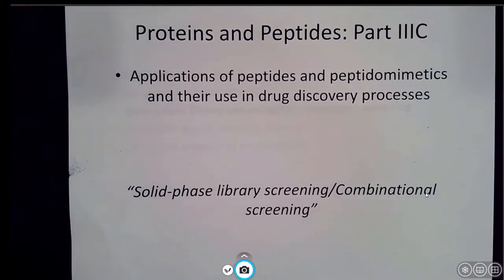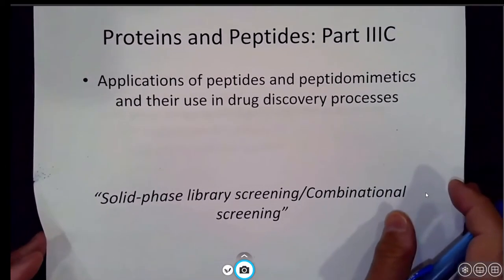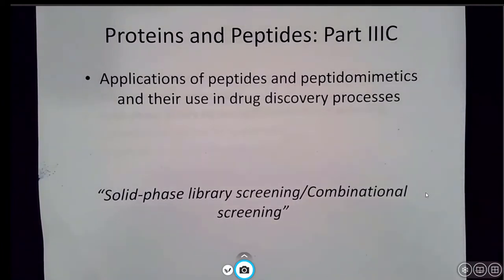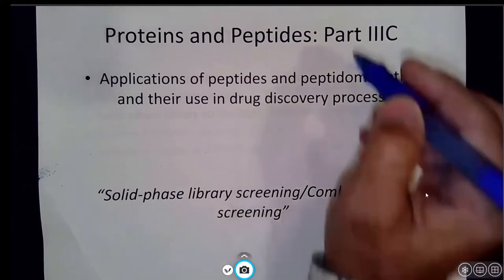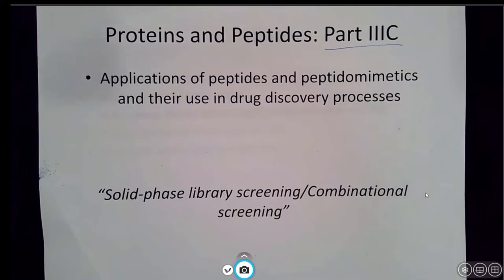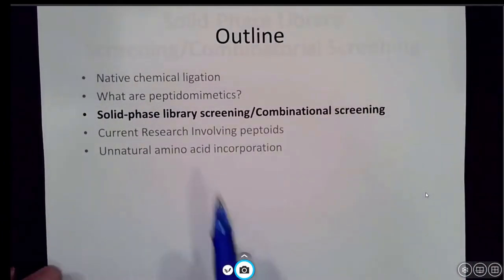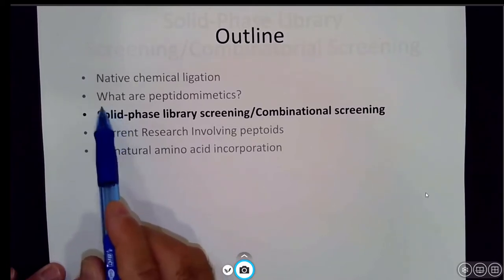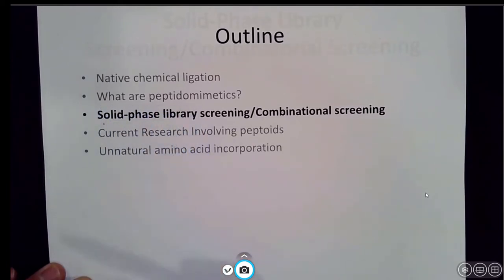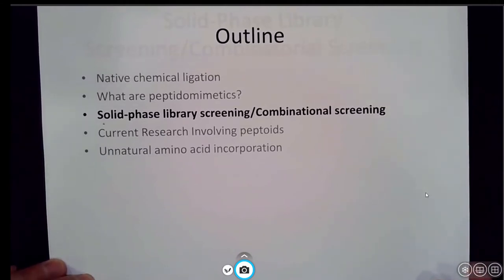Okay, welcome back everyone. Today we're going to focus again on the application of peptides and peptidomimetics and their use in drug discovery process. Today we'll be focusing on Part 3C, specifically looking at solid phase library screening and combinatorial screening. With respect to our outline, we're currently halfway through. We just finished peptidomimetics - you just learned recently how to make all these different types of peptide-like molecules. Today the focus is going to be on screening large combinations of these types of compounds.